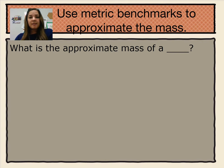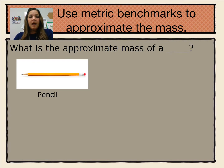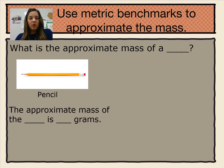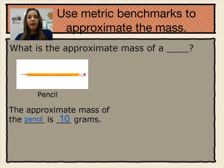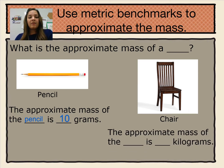We're going to use the metric system benchmarks that we just talked about to approximate mass for different objects. The question stem we'll be using is: what is the approximate mass of a blank? For a pencil, the approximate mass of the pencil is 10 grams. We're going to use kilograms to estimate the relative size of a chair. The approximate mass of the chair is 4 kilograms.